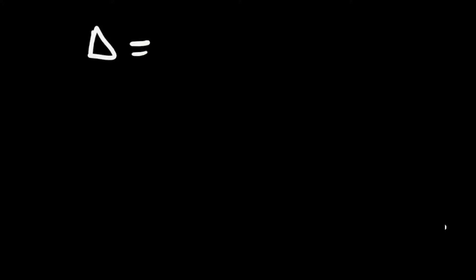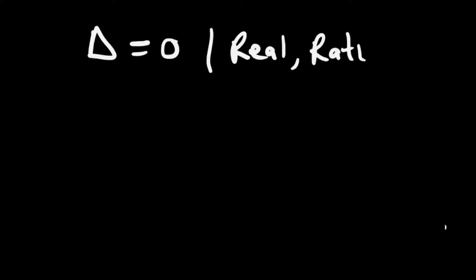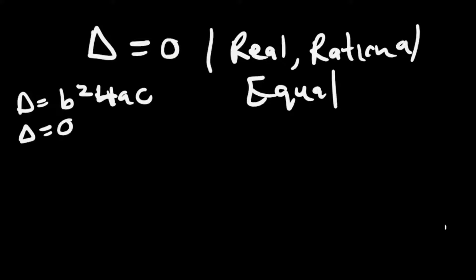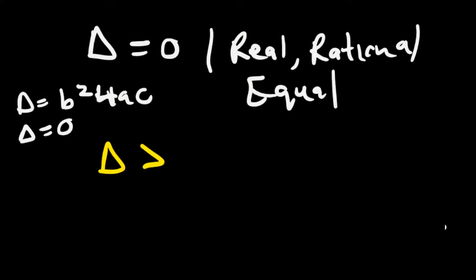The rules are as follows. When the discriminant — that is, b squared minus 4ac — is equal to zero, the nature of the roots is that they are real, rational, and equal. So when you substitute into b squared minus 4ac and get zero, those roots are real, rational, and equal.